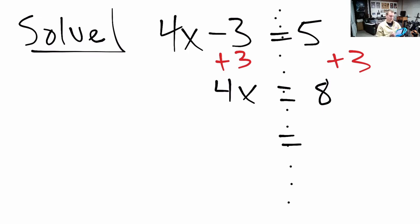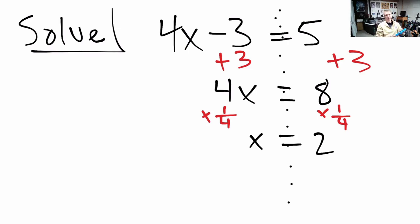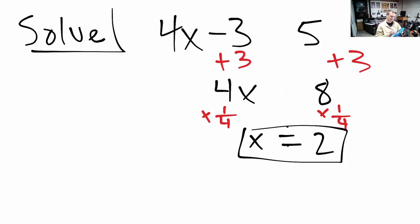Now I want to get just x on the left instead of 4x, so I'll multiply both sides by one-fourth, or equivalently divide by 4. That gives us x equals 2. Whenever x equals 2 is true, then 4x equals 8 is true, and then 4x minus 3 equals 5 must be true. So the solution is x equals 2.